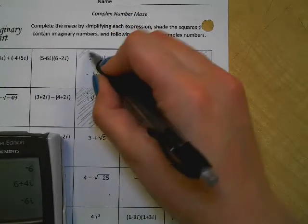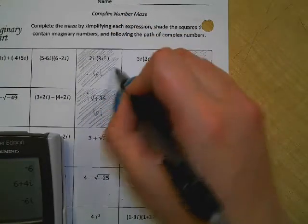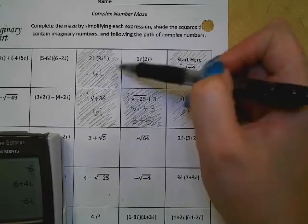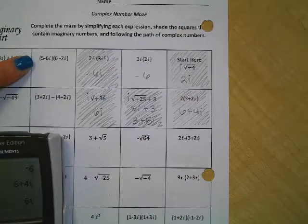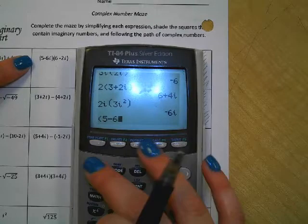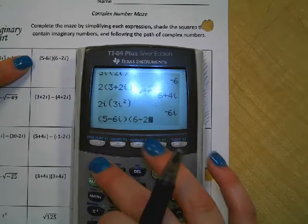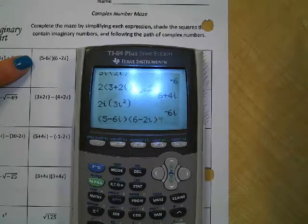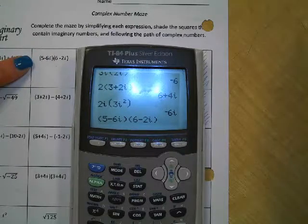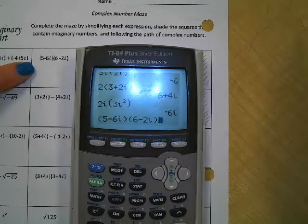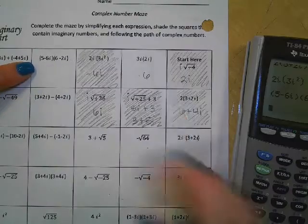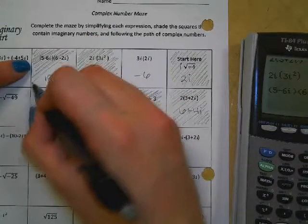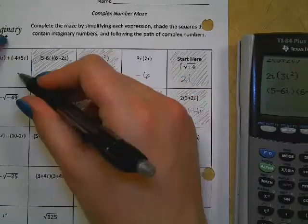So from this box, we can go left, or we can go right. We know we're not going to go right, so we're definitely going to be going left. And what do you get when you type that in? Perfect. 18 minus 46i.